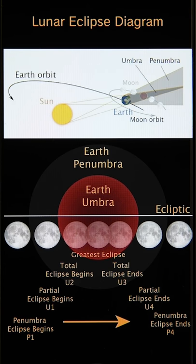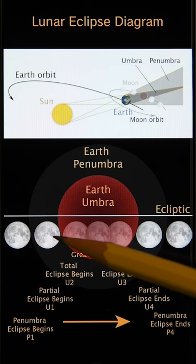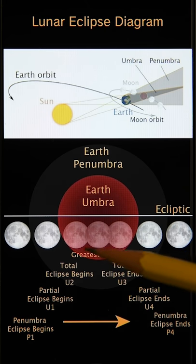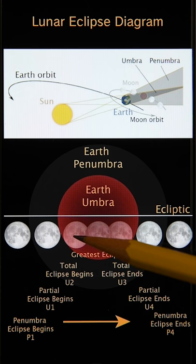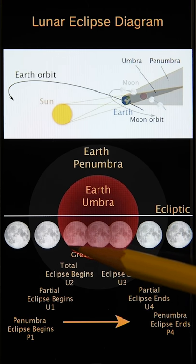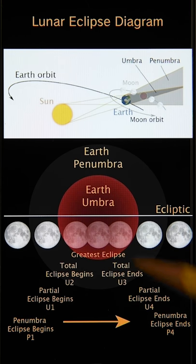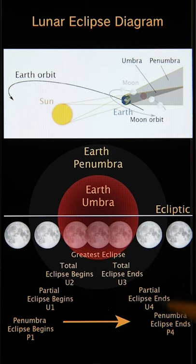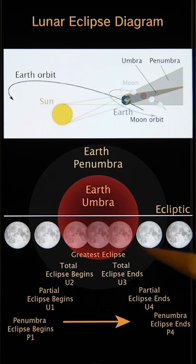There are also four contacts of the moon with the umbra circles. U1 is the first external contact of the moon with the umbra — this is when the noticeable partial eclipse begins. U2 is the first internal contact with the umbral shadow — this is when the total lunar eclipse begins. U3 is the second internal contact with the umbral shadow — this is when the total lunar eclipse ends. And U4 is the second external contact with the umbral shadow and the final contact of the moon with the umbra. After U4, the eclipse is pretty much over.